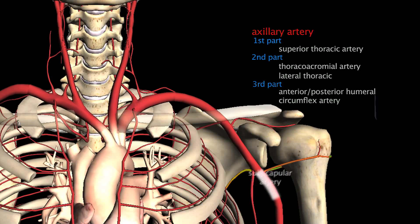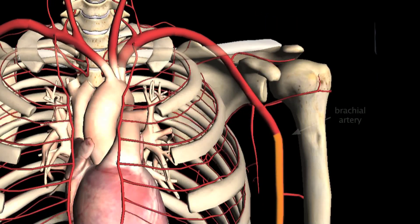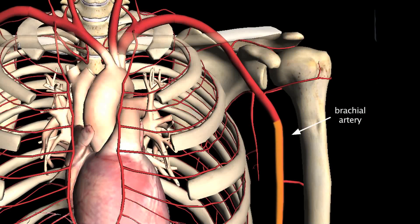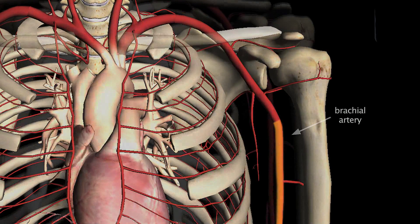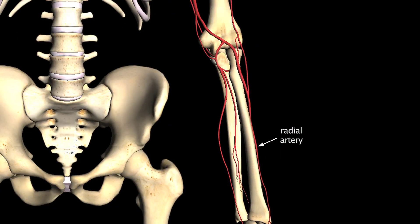The axillary artery then turns into the brachial artery once you pass the axilla, or the armpit. The brachial artery courses along the medial side of the arm until it reaches the cubital space, where it splits, giving off the radial artery which travels along the radius, and the ulnar artery which travels along the ulna.